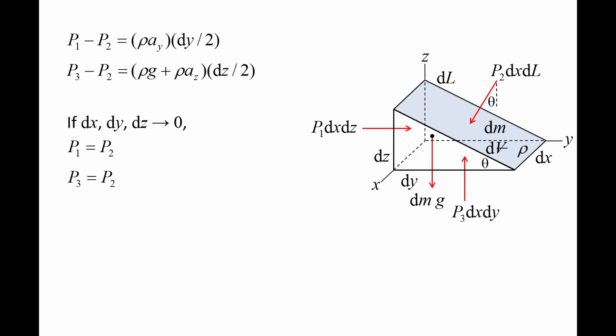For a point in space, p1 is equal to p2, and p3 is equal to p2. This means that p1, p2, and p3 are equal to each other.